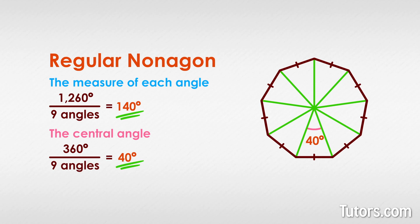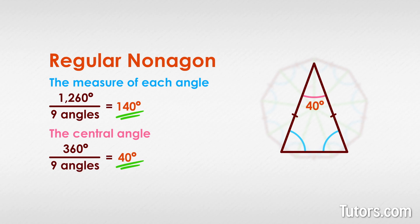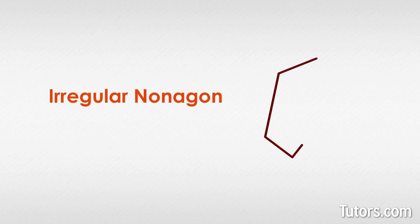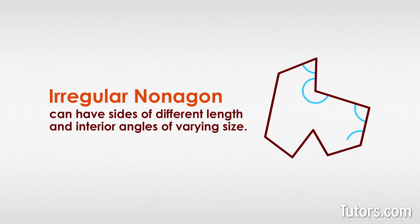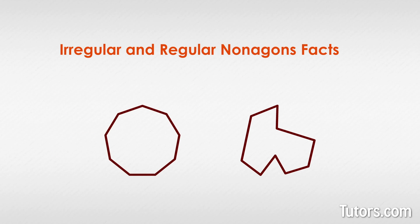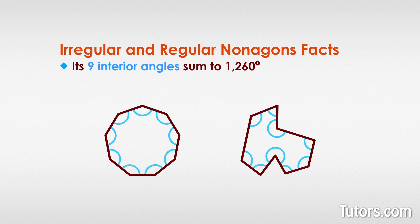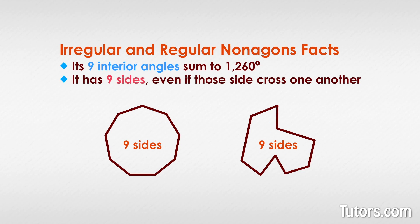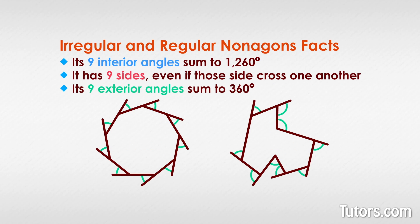You can construct a regular nonagon with seven isosceles triangles, each with two angles of 70 degrees and one angle of 40 degrees. Irregular nonagons can have sides of different lengths and interior angles of varying size, yet even odd shapes like these are nonagons. Both irregular and regular nonagons share the same facts: nine interior angles summing to 1260 degrees, nine sides, and nine exterior angles summing to 360 degrees.